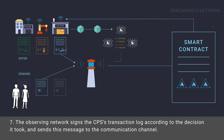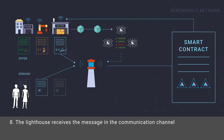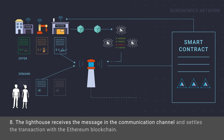The observing network sends this message to the communication channel. The lighthouse receives the message in the communication channel and settles the transaction with the Ethereum blockchain.